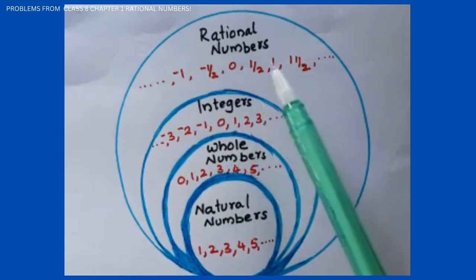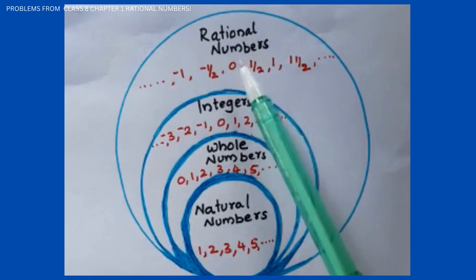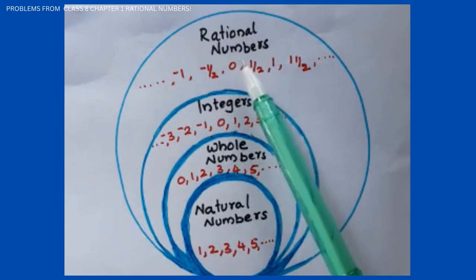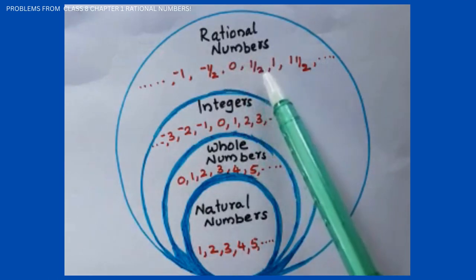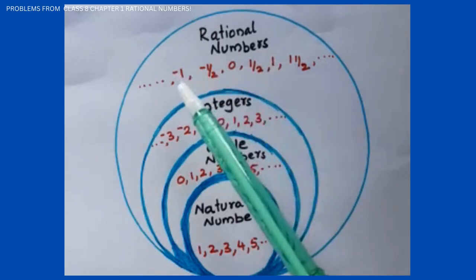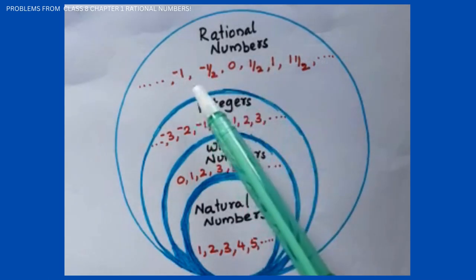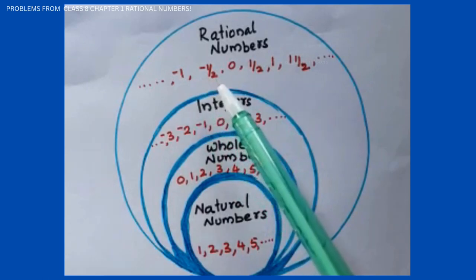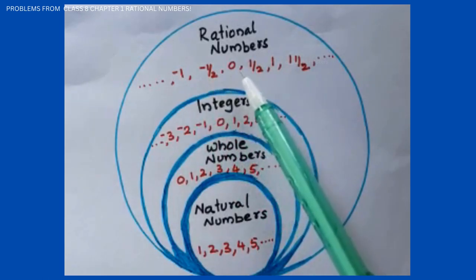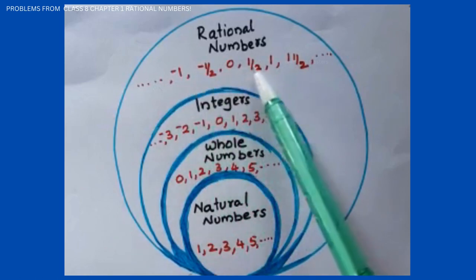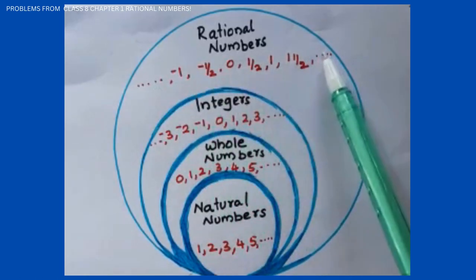Next class: rational numbers. Rational numbers are numbers in the form of p by q, where q is not equal to 0. Examples: minus 1 by 2, 3 by 2, 4 by 2, etc.